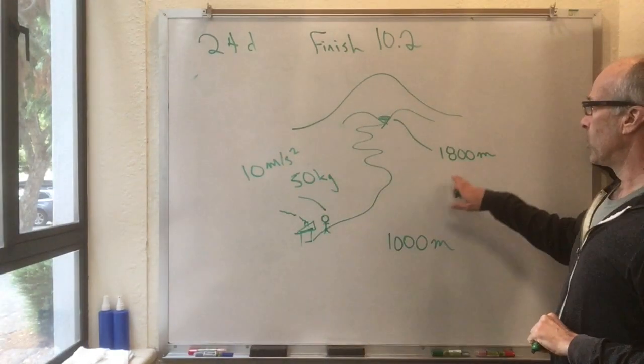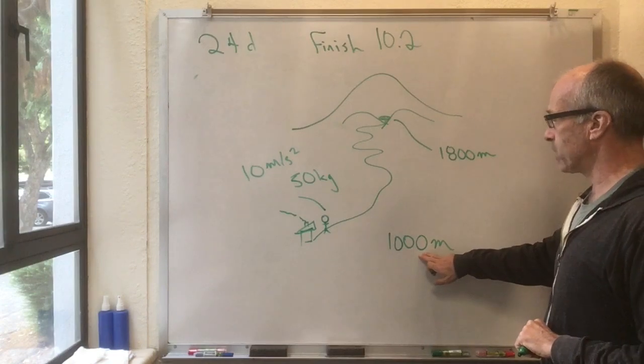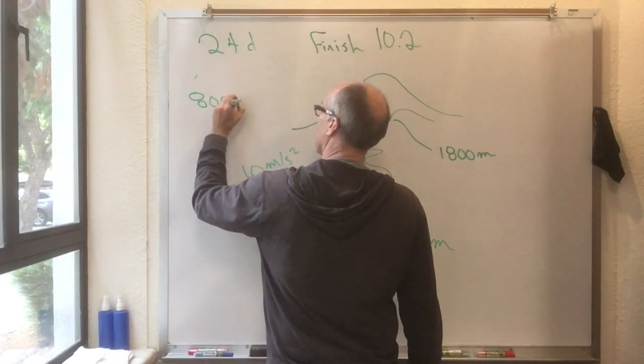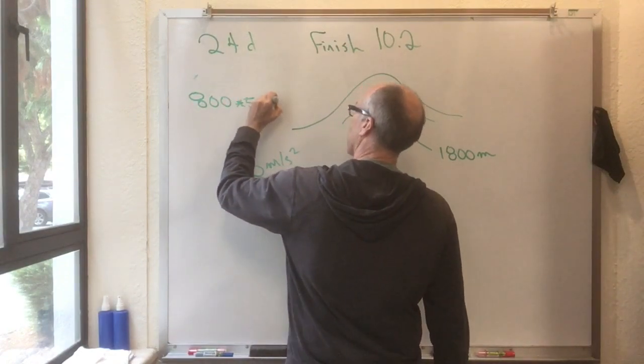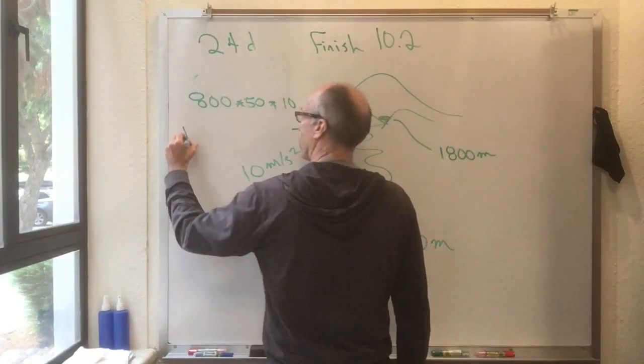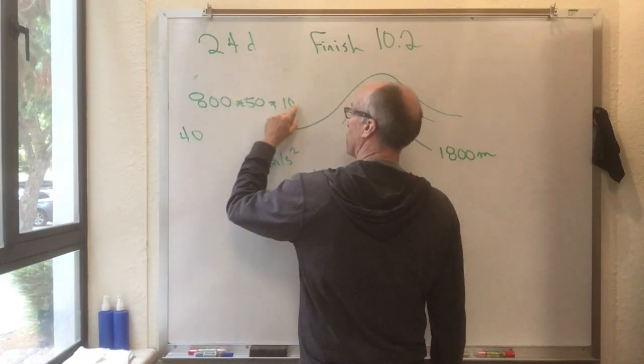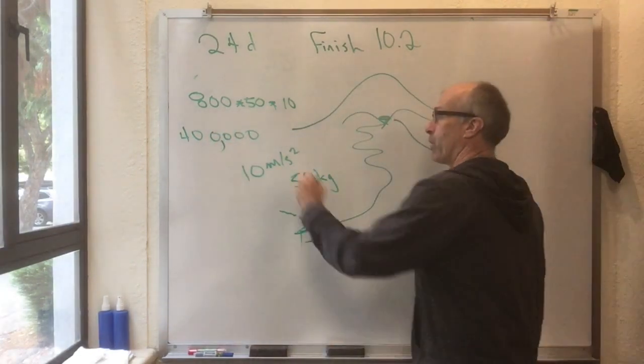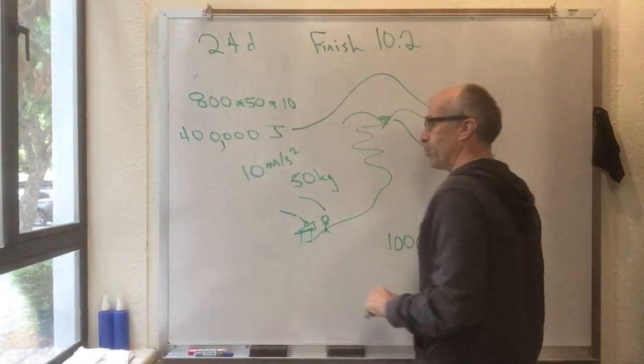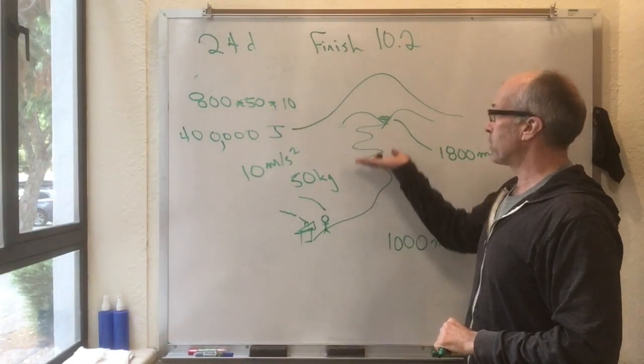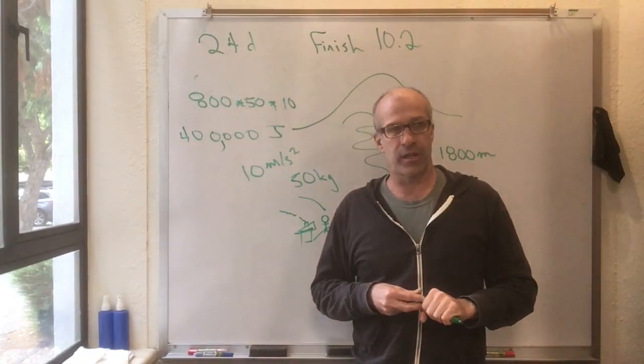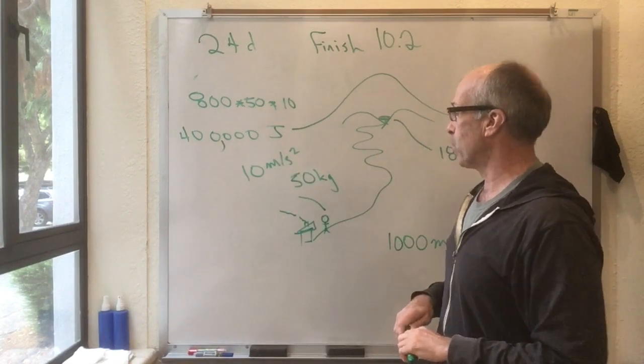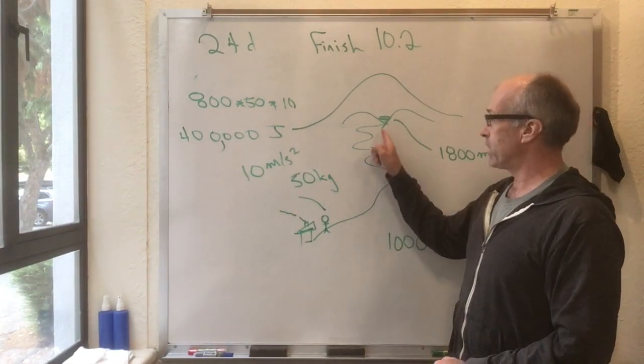Then 1,800 minus 1,000 times 50 times 10, which is 800 times 50 times 10, 5 times 8 is 40, 400,000. Looks like you'll have to do 400,000 joules of work to lift yourself up to there. Or correspondingly, the gravitational field is going to do negative 400,000 joules of work. But it looks like you're taking a circuitous path here.